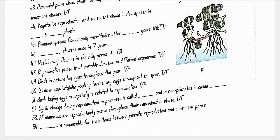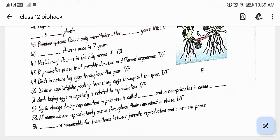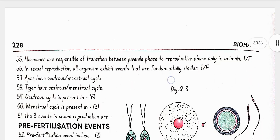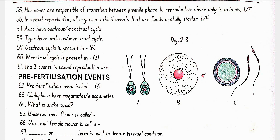Birds laying eggs in captivity is related to reproduction — false. Cyclic change during reproduction in primates is called the menstrual cycle and in non-primates is called the estrus cycle. All mammals are vegetatively active throughout the reproductive phase — false. Hormones are responsible for transitions between juvenile, reproductive and senescent phases — in both plants and animals.